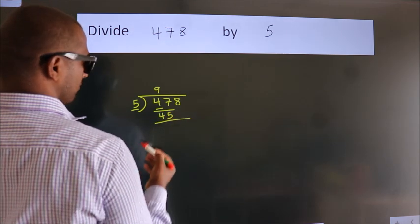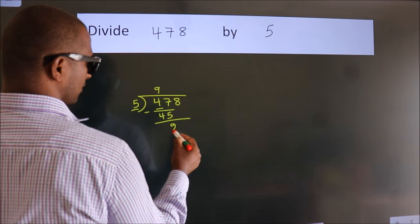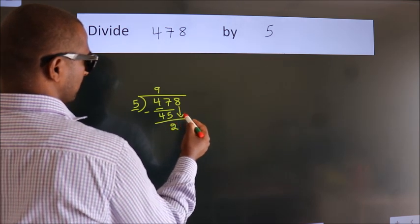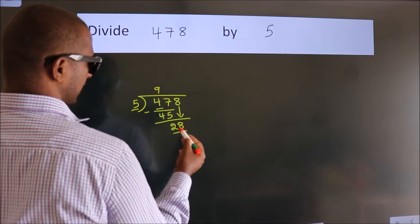Now we should subtract. We get 2. After this, bring down the beside number. So 8 down. So 28.